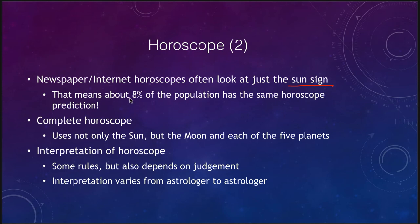This means that essentially 8% of the population has exactly the same horoscope prediction every day — almost one in ten people will have the same prediction as you. It would be odd that hundreds of millions of people would have exactly the same day. That would not be something that would be scientifically possible.